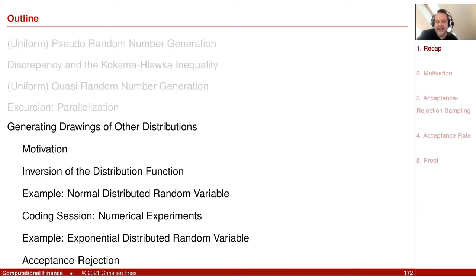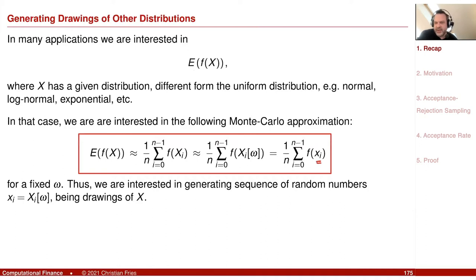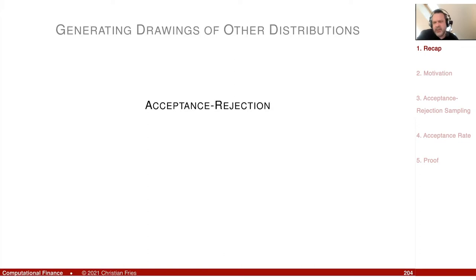We already saw two nice examples: normal distributed random variable and exponential distributed random variable. The broader context is that we like to generate a sequence of random numbers, sampling from a random variable that is not uniform — so it has some other distribution. We already had the observation that the normal distribution doesn't have a distribution function where we can apply our nice method of inversion of the distribution function.